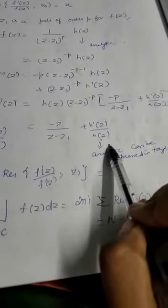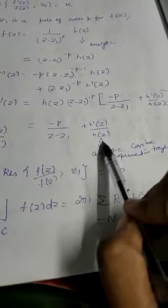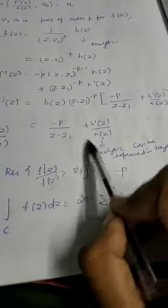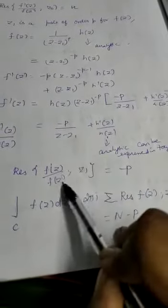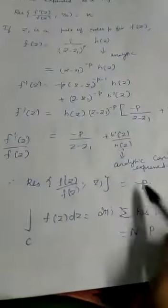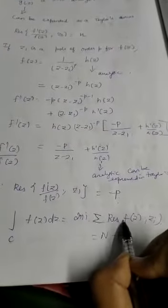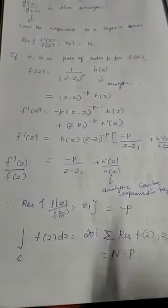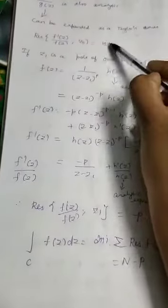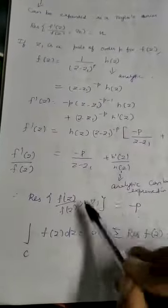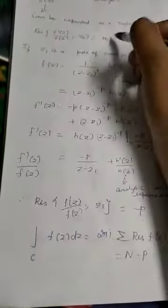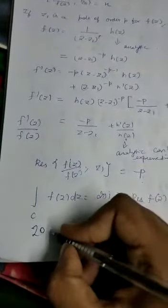Since h(z) is analytic, h'(z)/h(z) can be expressed as a Taylor series with no principal part — so no term containing 1/(z − z1) comes from it. Therefore, the residue of f'(z)/f(z) at z1 (a pole of order p) is −p. By the residue theorem, the integral over C of f'(z)/f(z) dz equals 2πi times the sum of residues at all singularities. The singularities are zeros (residue = n) and poles (residue = −p).